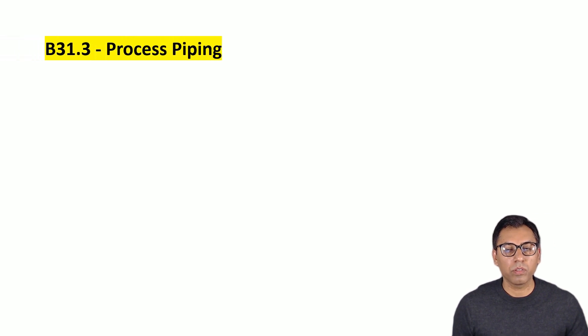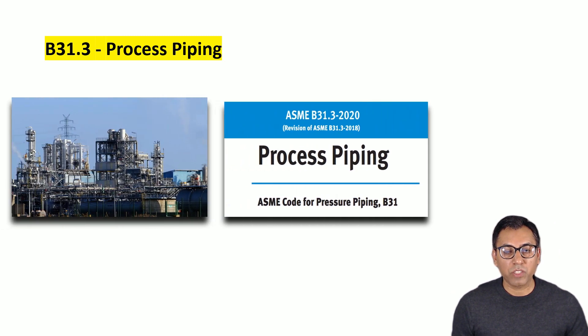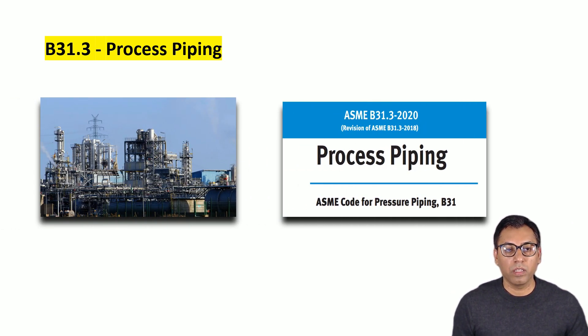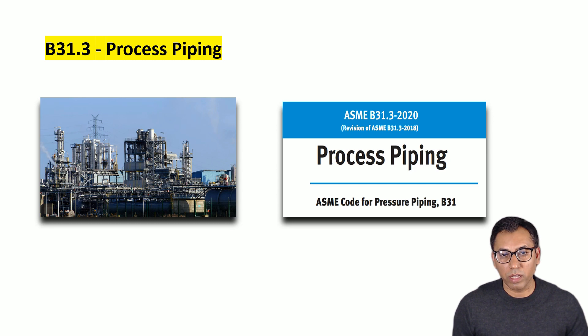The next chapter is B31.3, which is Process Piping. The B31.3 process piping code establishes requirements for design, material, fabrication, inspection, testing and construction of process piping. These piping systems are typically found in petroleum refineries, chemical, pharmaceutical, textile, paper, semiconductor and cryogenic plants, and related process piping terminals.